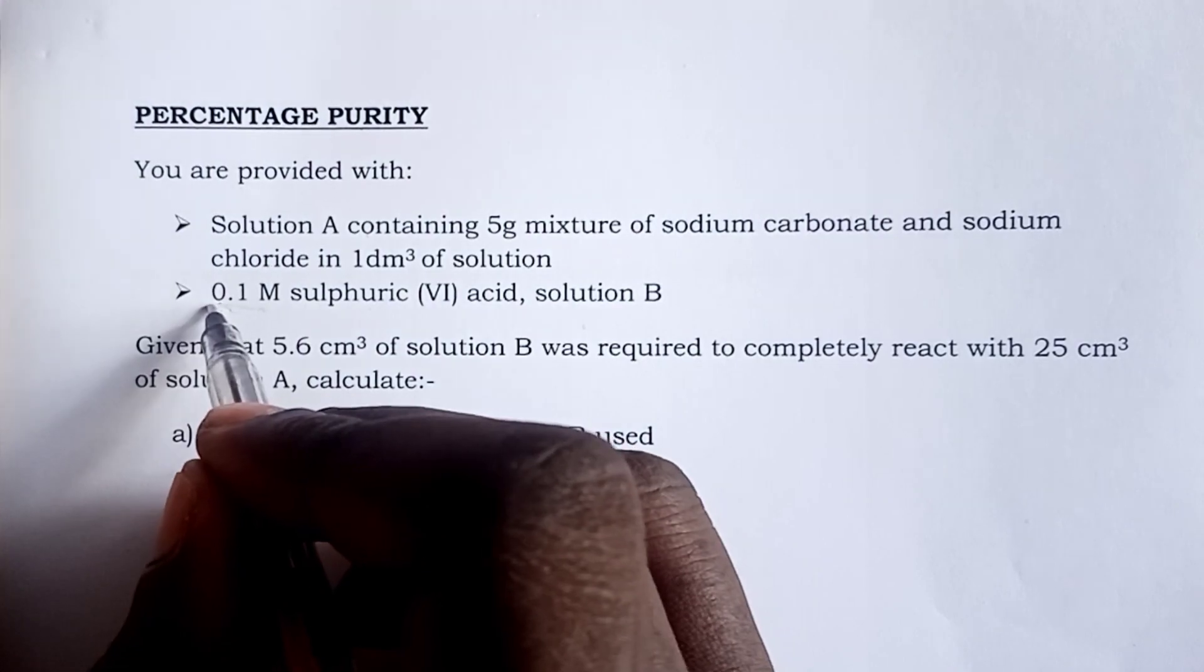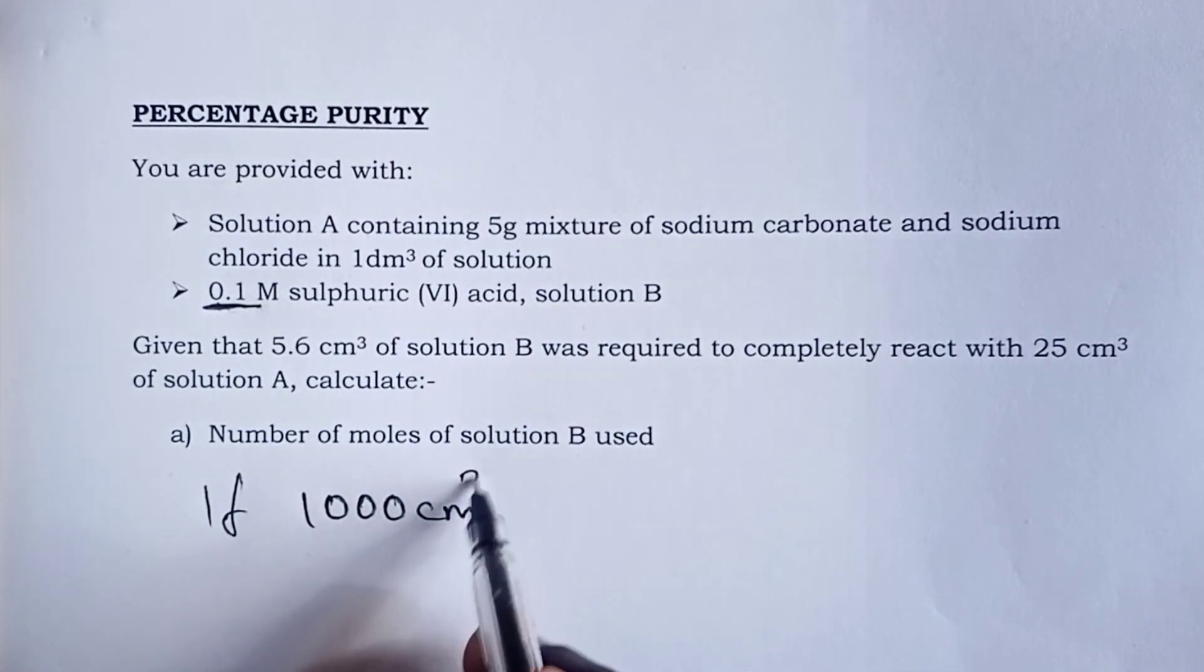So the first part of the question is asking you to calculate the number of moles of solution B that were used. And as usual, we have always told our students to use the first principle approach in answering such kind of questions. So the answer here would be quite easy. The volume that is here in 0.1 molar sulfuric acid is actually 1 liter. So the answer here would be that if 1,000 cubic centimeter is 0.1 molar,